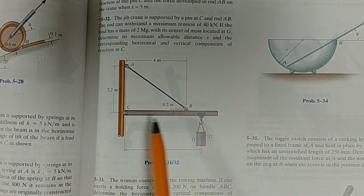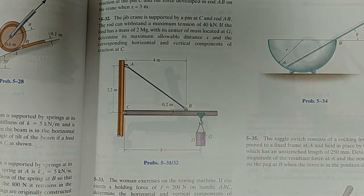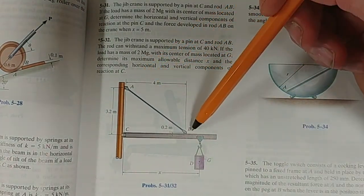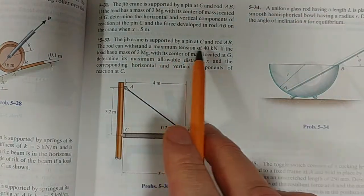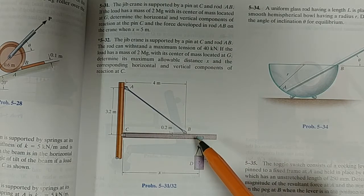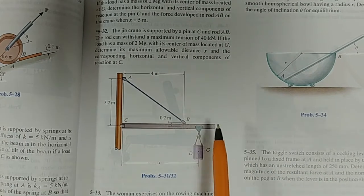And as you can see, this weight can move up and down like this. And the question is, this rod here AB can support a maximum tension of 40 kilonewton, maximum tension.